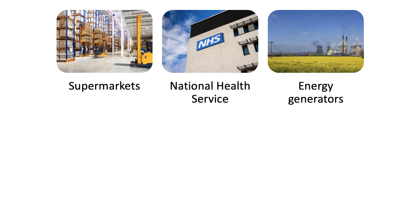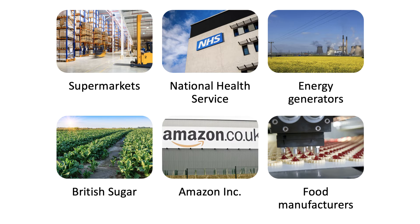The National Health Service is a good example — they have significant buying power or monopsony power when purchasing raw materials, PPE, vaccines, or other materials and resources used in providing health care. The big electricity-generating businesses, the power stations, have buying power when sourcing contracts for coal, gas, or renewable energy. British Sugar is a great example, one of my favourite examples of monopsony.